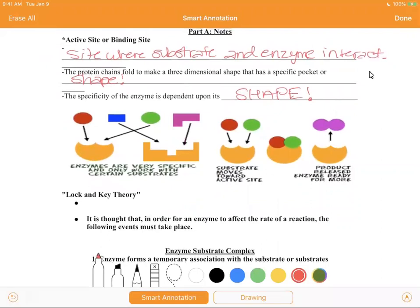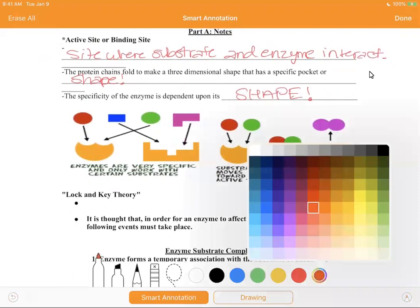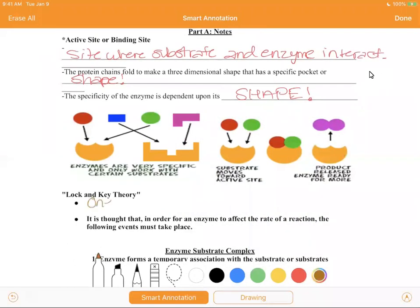So if you look at the lock and key theory, it is thought that in order for an enzyme to affect the rate of reaction, the following... So the lock and key theory means one enzyme to one substrate.